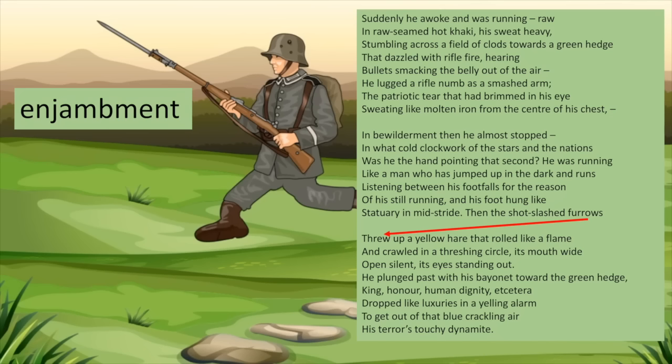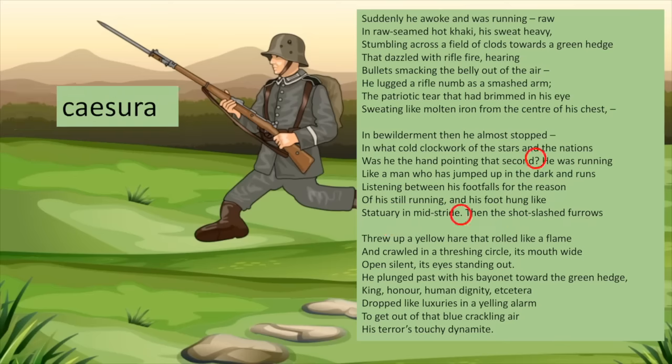Similarly, Hughes employs caesura, presenting the end of sentences mid-line, stopped with full stops or question marks. This caesura, particularly when considered alongside the enjambment, once again causes the reader difficulty. It's interesting to note that this device is only used twice in the poem, both times in the second stanza, where the soldier stops to consider what he is doing and why. The caesura forces the reader, like the soldier, to stop and think.